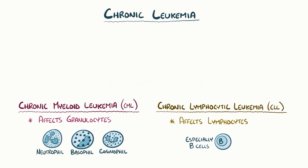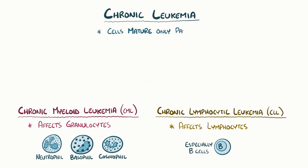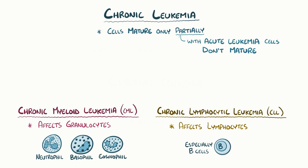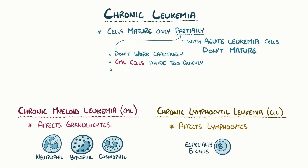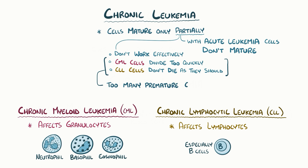Both CML and CLL cause cells to mature only partially, and that's a key distinction from acute leukemias where the cells don't mature at all. As a result, these abnormal, premature leukocytes don't work effectively, which weakens the immune system. In addition, the chromosomal changes alter the cell's normal cell cycle. As a result, in CML the cells start to divide way too quickly, and in CLL the cells don't die when they should, and in both situations we're left with way too many of these premature cells.